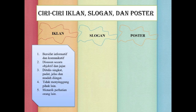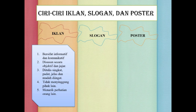Yang ketiga, yaitu ditulis singkat, padat, jelas, dan mudah diingat. Ditulis singkat di sini bukan berarti tulisannya yang disingkat-singkat, namun tulisannya itu pendek — tapi pendek di sini memiliki makna yang padat namun jelas — dan mudah diingat. Yang keempat, tidak menyinggung pihak lain, baik itu dari perusahaan, organisasi, dan yang lainnya. Dan terakhir yaitu menarik perhatian orang lain.